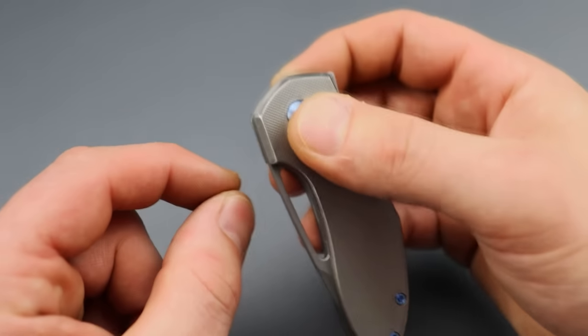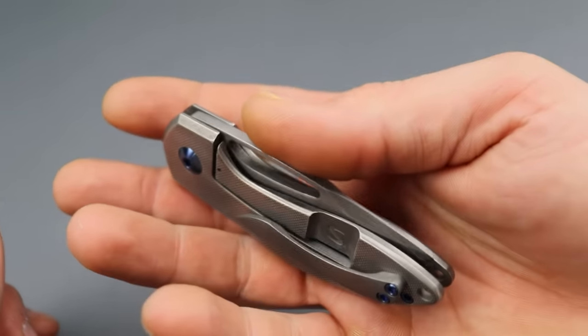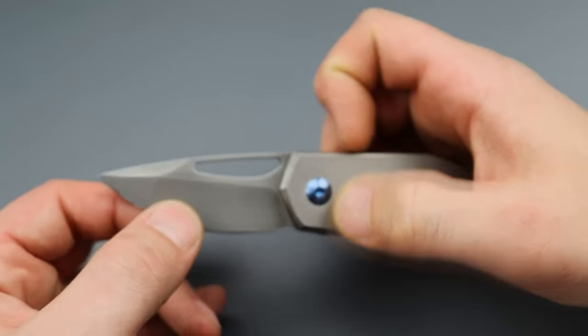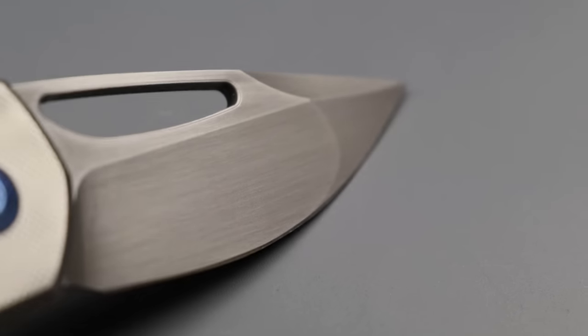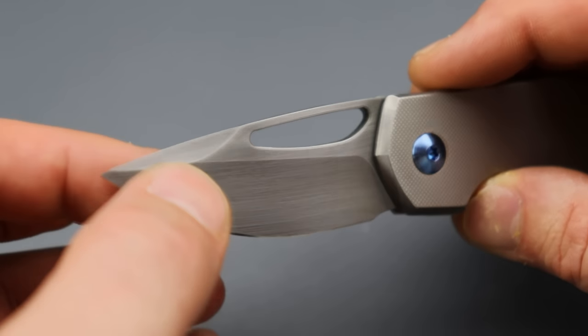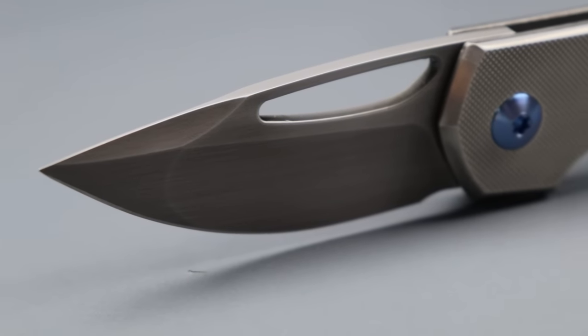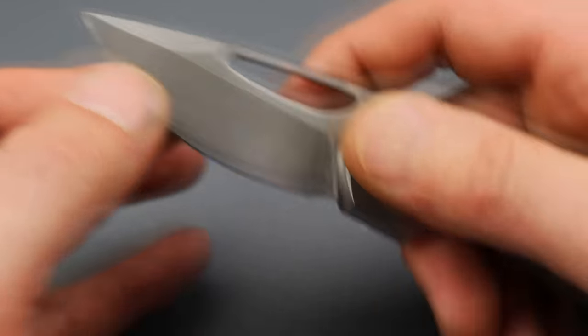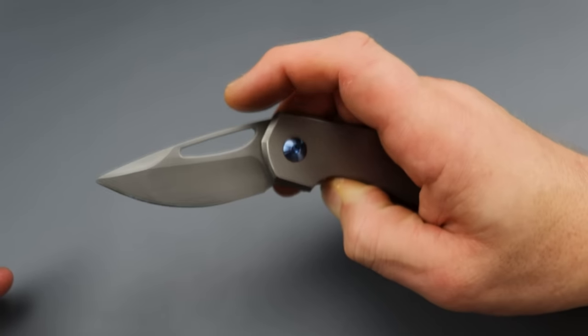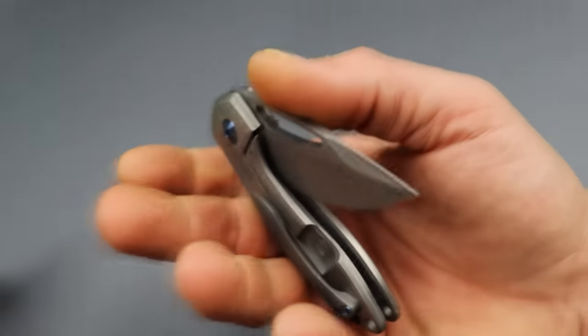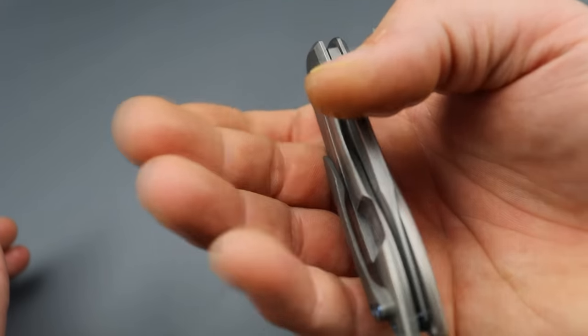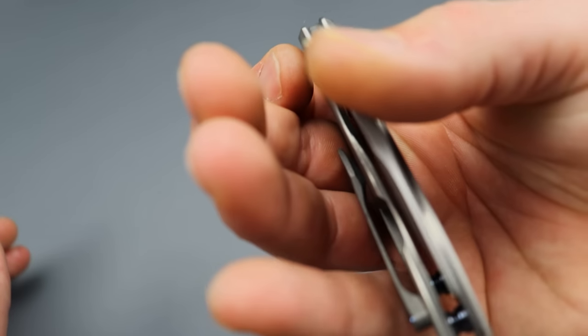Even from the flipper tab, fantastic flipping action. This hand rubbed satin CTS XHP blade has a drop point dual ground, so it has a hollow here and a flat here, but then it also has a hollow swedge going down to the tip making the tip very pokey and precise. This is a great size. It's a little compact knife but it's perfect size for fidgeting and also a perfect size for being a useful knife design. You can hear the detent when it clicks back in.